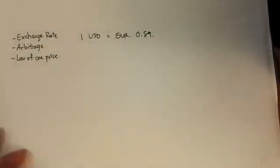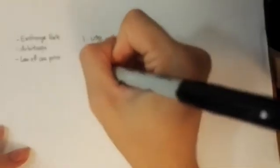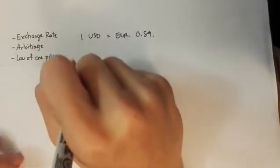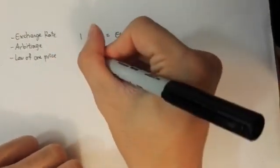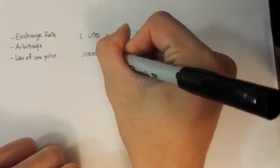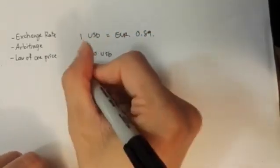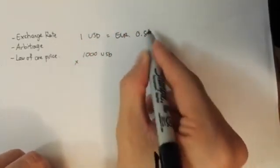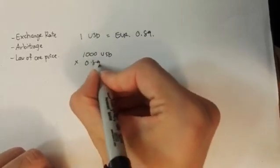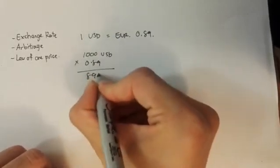So for every US dollar, I'll get 89 cents of euro. Let's say I'm going to Europe for my vacation. That would mean, let's say I'm changing 1,000 US dollar to euro, and I will just multiply it with this exchange rate. And that would give me about 890 euro.